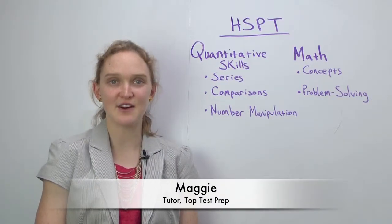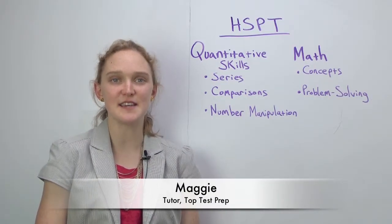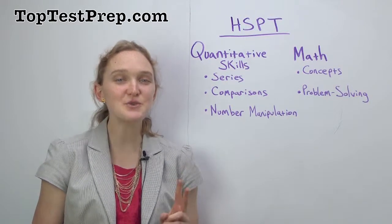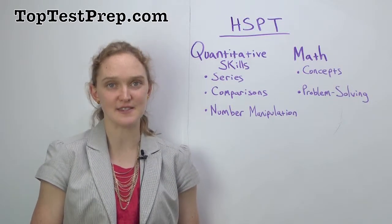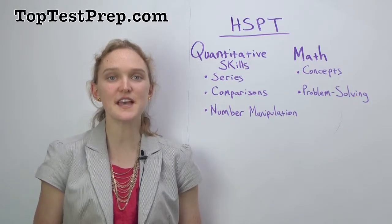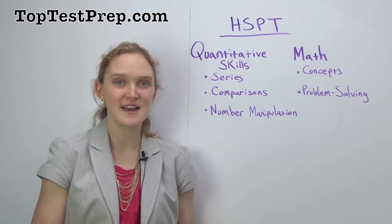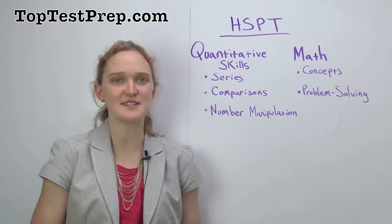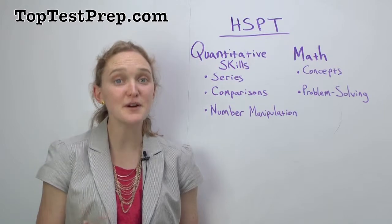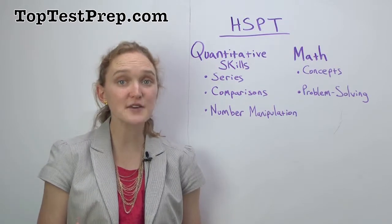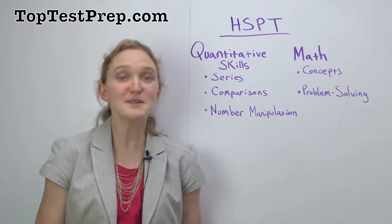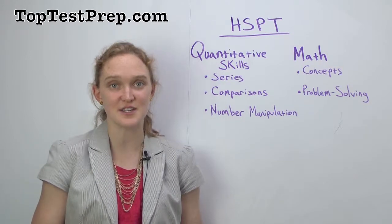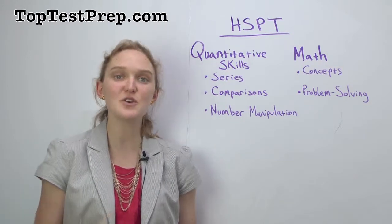When you're preparing for math on the HSPT, it's important to remember that there are actually two types of math sections on this test: quantitative reasoning and mathematics. They sound similar, but there are some pretty important differences between them. And remember, no calculators on the HSPT — but don't worry, they're not necessary at all to answer these questions.